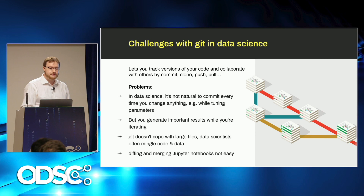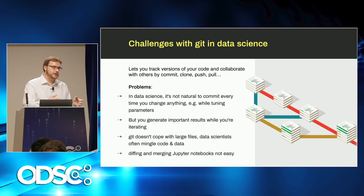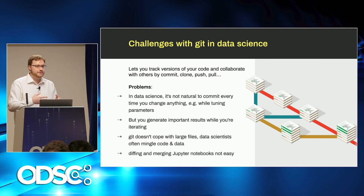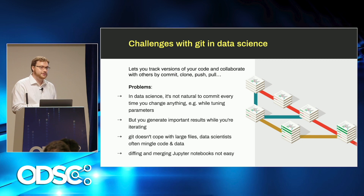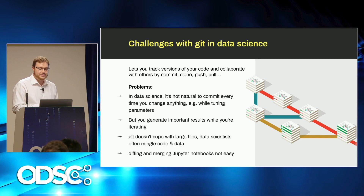However, there are some challenges with Git. When you're iterating on a model, it's not really natural to commit every time you change anything. While you're tuning parameters and re-running a model, it doesn't necessarily come naturally to people to make a new Git commit every time they change something, which makes it hard to keep track of what you were doing — and humans will reach for a notepad or spreadsheet to try and keep track manually. The other problem is that Git doesn't cope with large files, and data scientists often mingle code and data. And another problem with Git is that it sucks for Jupyter notebooks, because Jupyter notebooks are JSON files. If you've ever tried to merge a diff of JSON files — I see some people nodding — that can be pretty painful. You might not even end up with valid JSON.